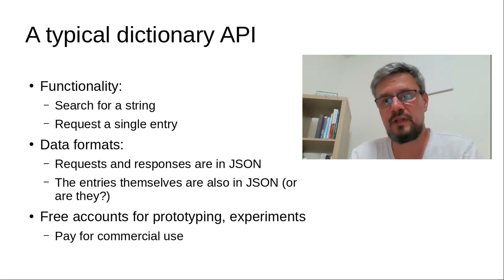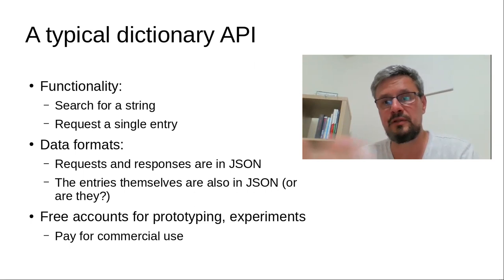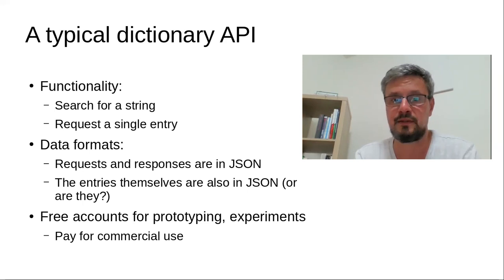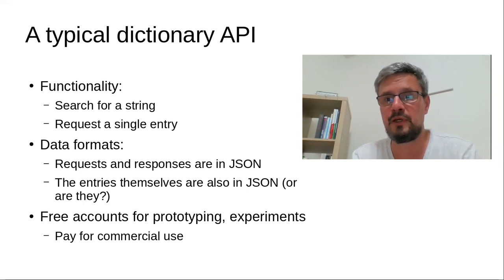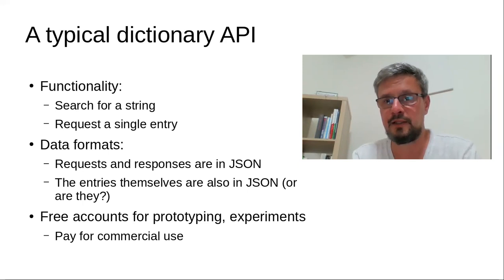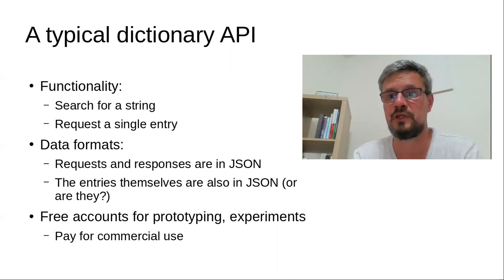A typical dictionary API offers more or less the same functionality that a dictionary website does, except in a machine-readable way. There's usually a way for the machine client to perform a search — supply a short piece of text and obtain a list of results — and a way for the client to request an individual entry by giving its ID. The data usually flows in JSON, and most dictionary API publishers make it possible to sign up for an account and start using the API as a third-party developer, trying it out and building prototypes, without having to pay — provided you're not using it for a commercial purpose and not exceeding usage quotas.